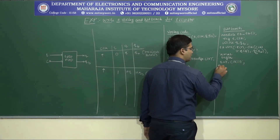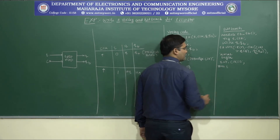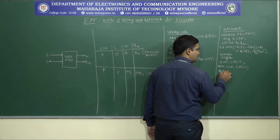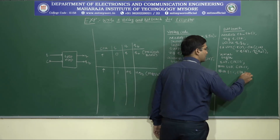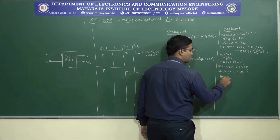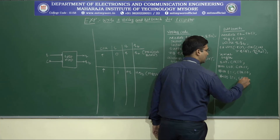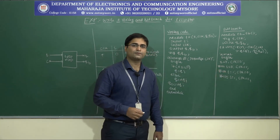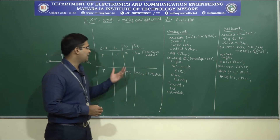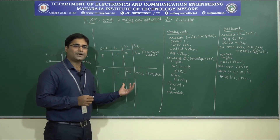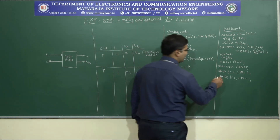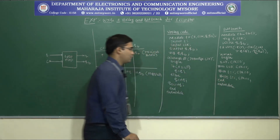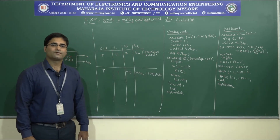In the initial begin block, we define the inputs: T equals 0, clock equals 0 as the first input. After 100 nanoseconds, T equals 0 and clock equals 0. After another 100 nanoseconds, T equals 1 and clock equals 0. After another 100 nanoseconds, T equals 1 and clock equals 1. We can define any number of inputs, and for each set of inputs we get an output that satisfies the truth table of the T flip-flop. We close with 'end' and 'endmodule'.